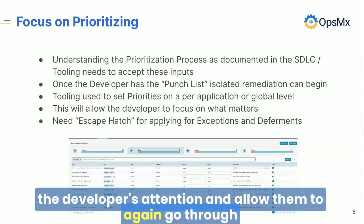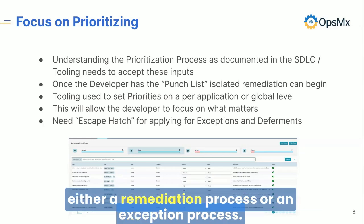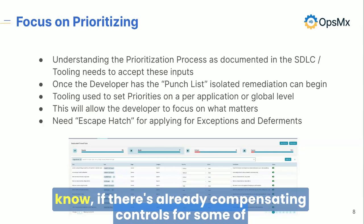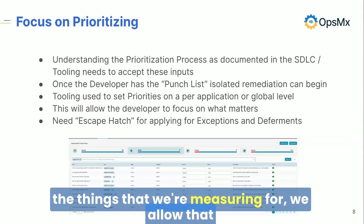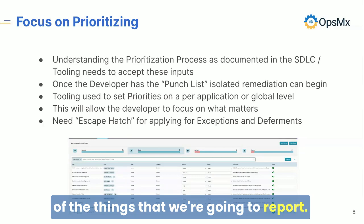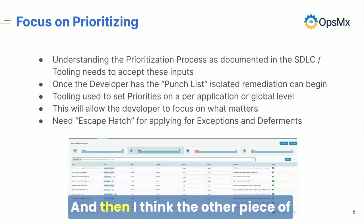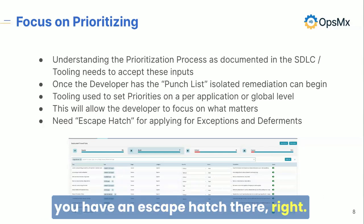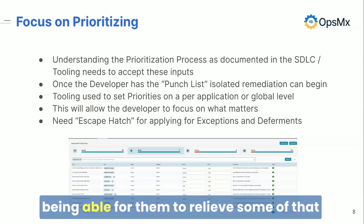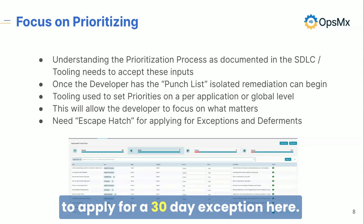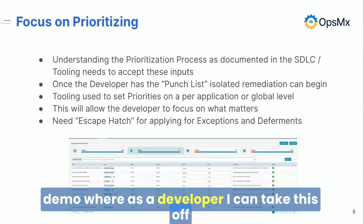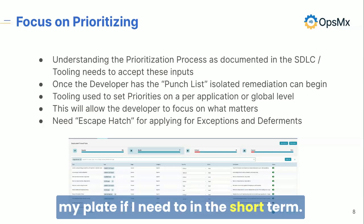We're going to bring these to the developer's attention and allow them to go through either a remediation process or an exception process. If there are already compensating controls for some of the things we're measuring, we allow that team — if they have the appropriate permissions — to pre-mitigate some of the things we're going to report that they already know they don't need to worry about. And there's an escape hatch: whenever someone's under a deadline and there's pressure, they can say, I've got a good case to apply for a 30-day exception. Let me open a JIRA ticket and apply for the exception — and we'll see this during the demo — so as a developer I can take this off my plate if I need to in the short term.